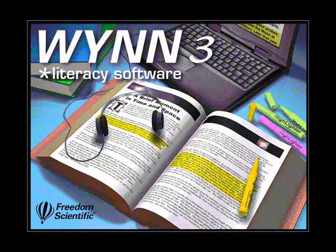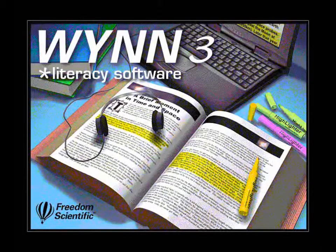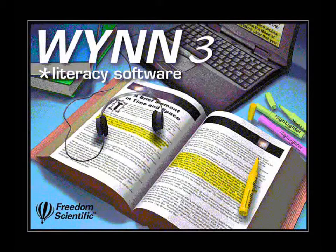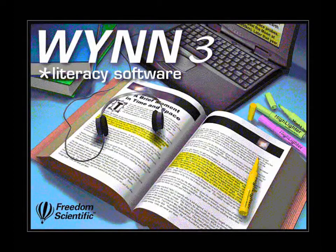Win is best suited for individuals who have difficulty with reading or who would benefit from study and writing tools. It is especially useful for individuals who need access to printed documents that are not available in electronic formats. However, Win does not provide screen reading functions for menus and toolbars and may not be appropriate for people who are blind or visually impaired. Screen reading software is available to users needing this type of support.